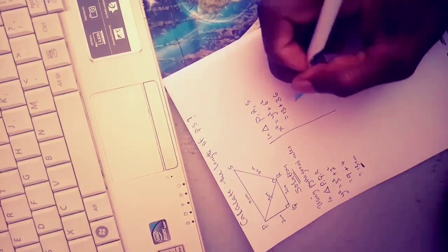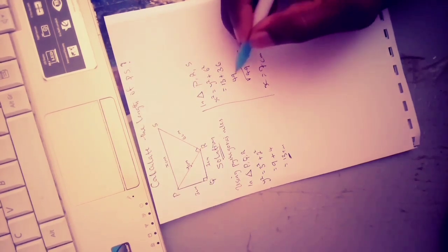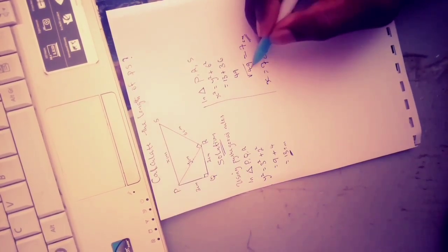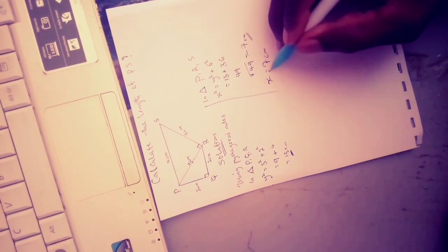From here we are going to take the square root of 49. The square root of 49 equals to 7 centimeters, so our x equals to 7 centimeters. That is our final answer. Our PS, which is x, equals to 7 centimeters.